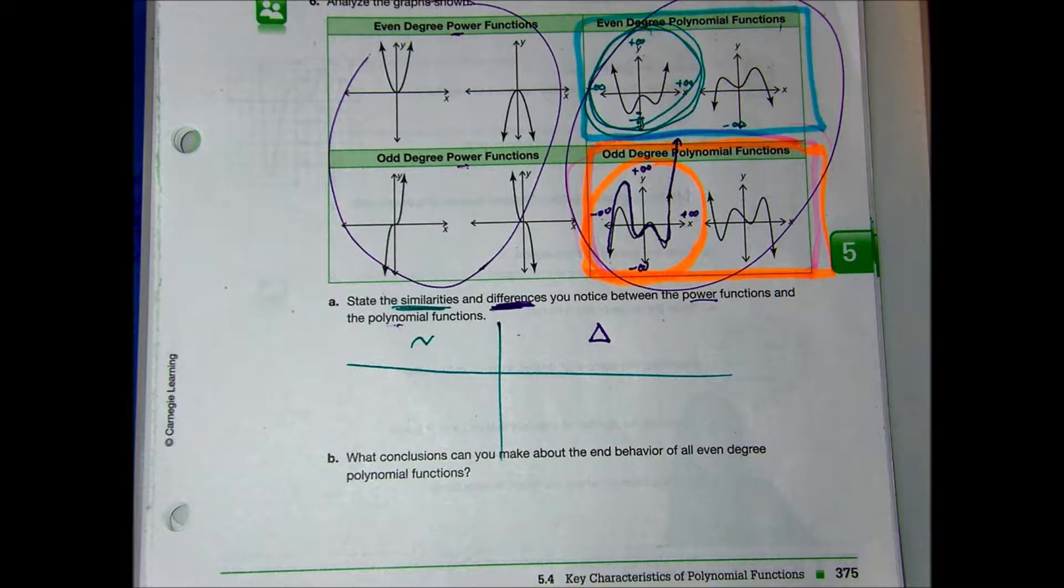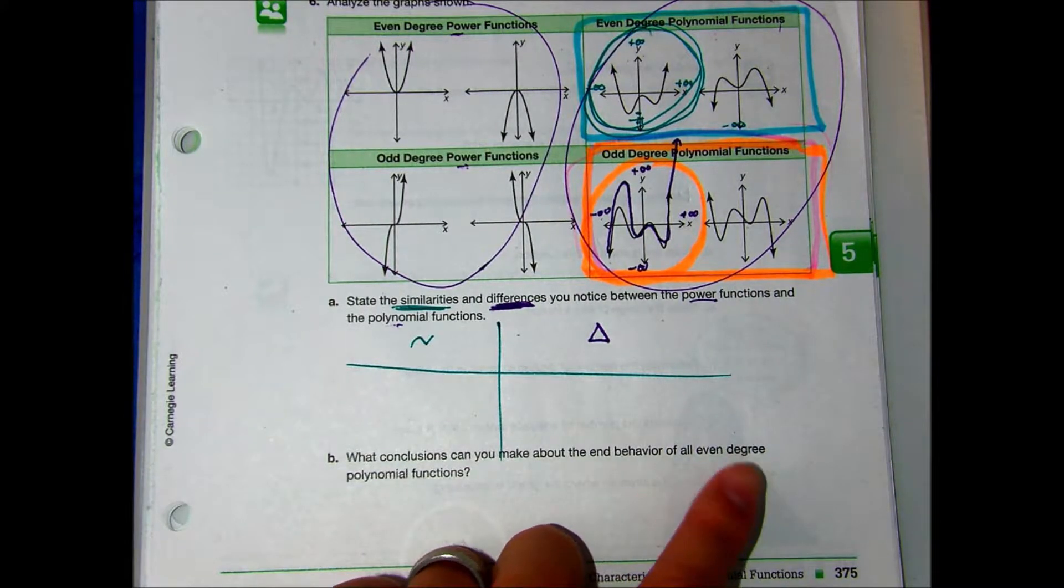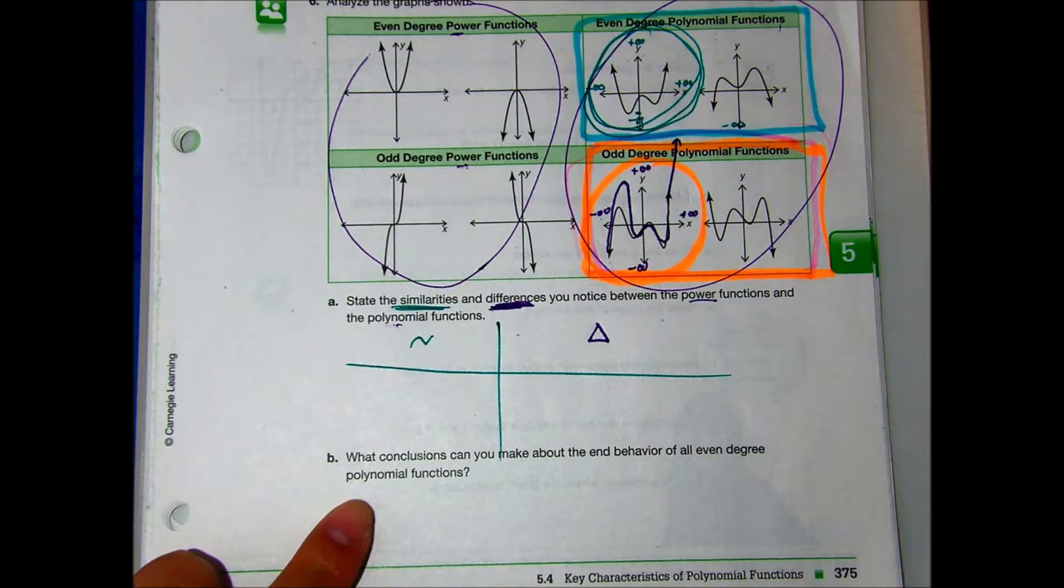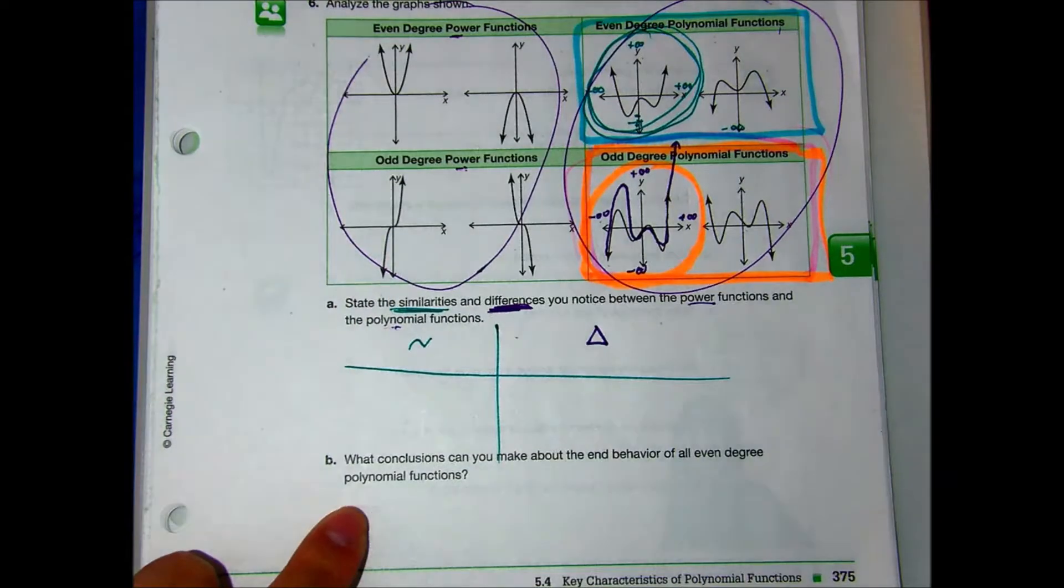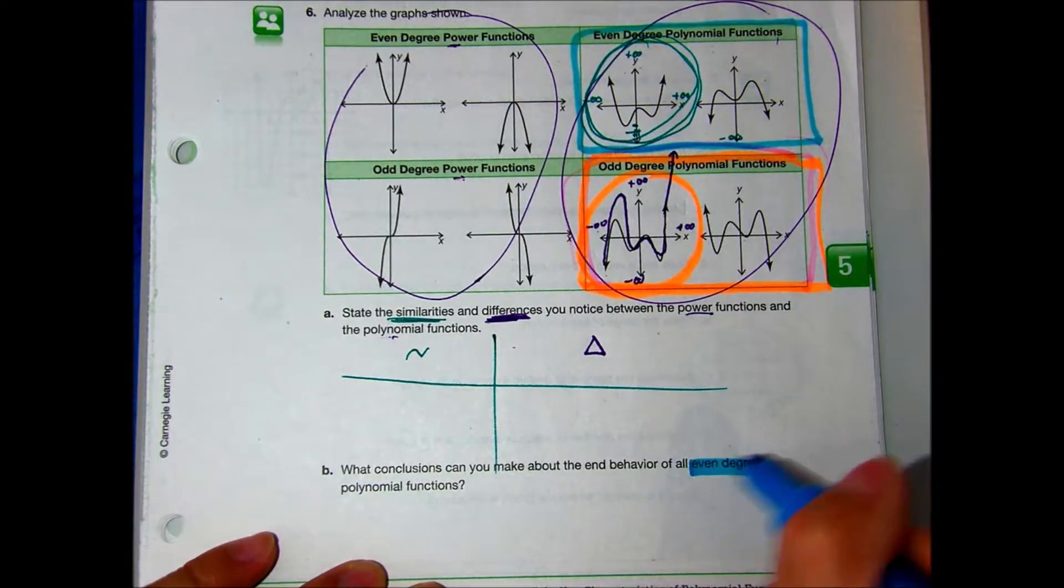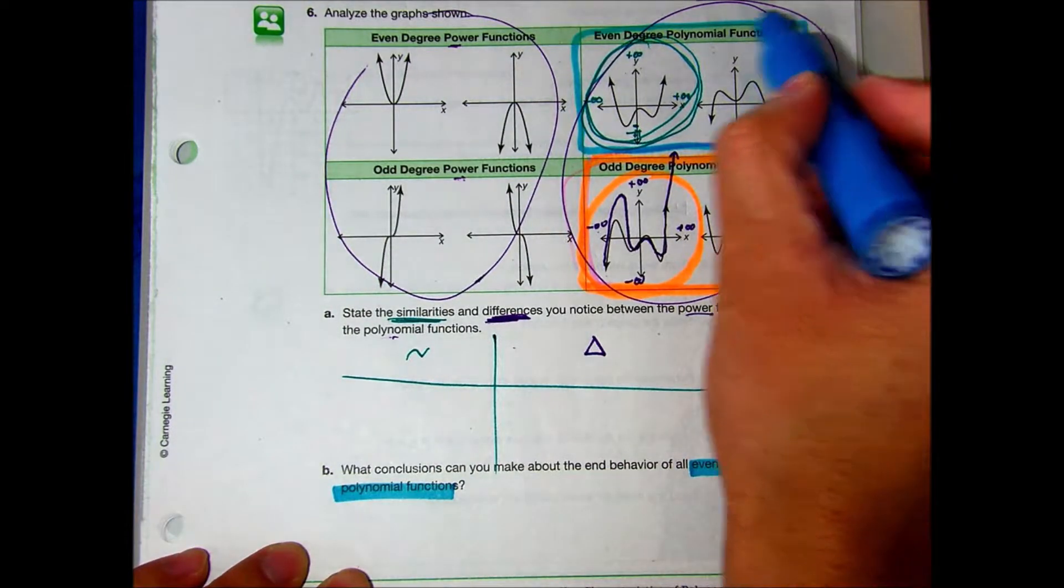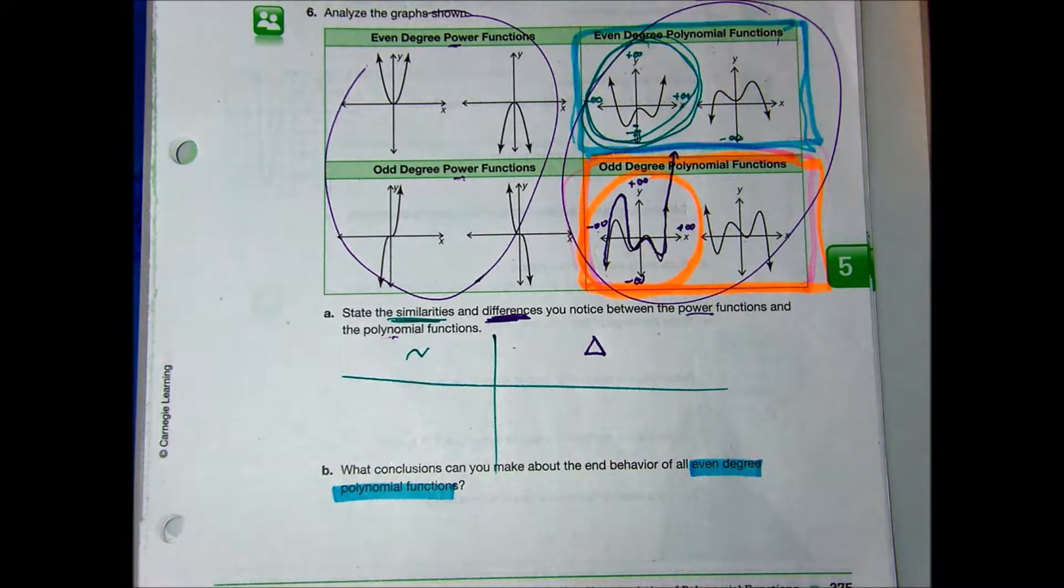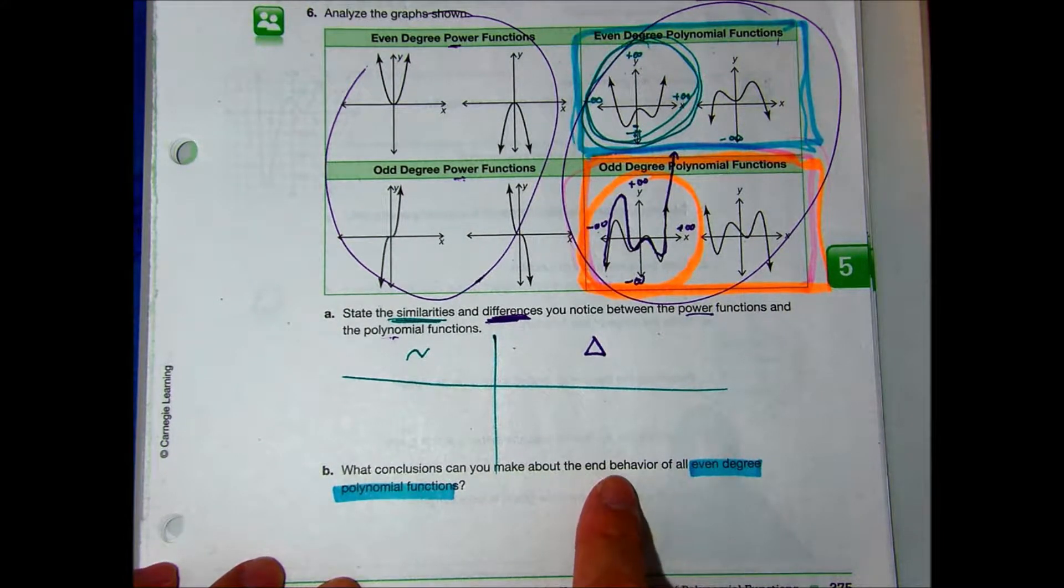Jesse A, read B for us, please. What conclusions can you make about the end-degree polynomial functions? So, even-degree polynomial functions. It's one of these four. Put your finger on it. Even-degree polynomials is the one in blue. You see it? It's saying, what conclusions can you make about the end-behavior?